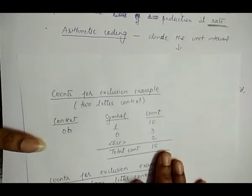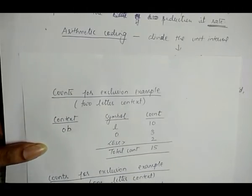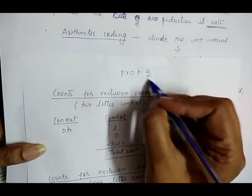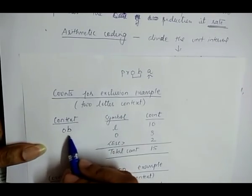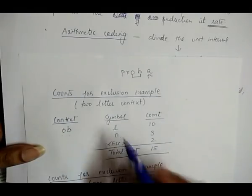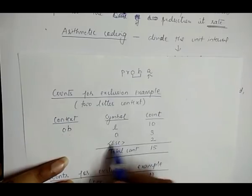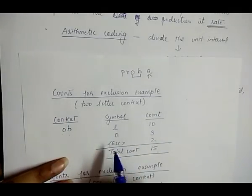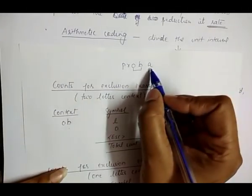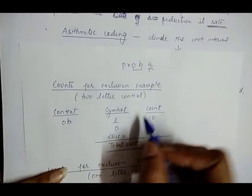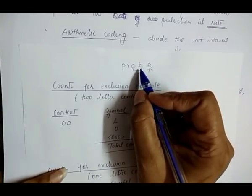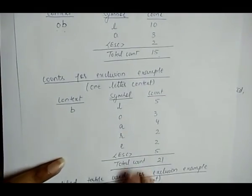We create a table for the two-order context and for the one-order context for this letter A. For the two-order context, the context is OB, and the symbols encountered in the sequence are L and O, with their respective counts, an escape value of 2, and a total count of 15. This table creation was already discussed in our basic algorithm. For the one-order context, the context is B, and we create a corresponding table for that.